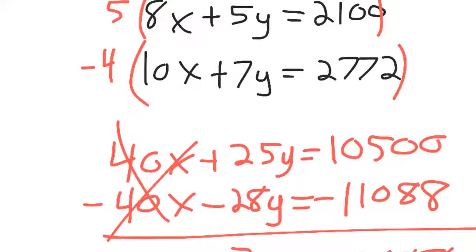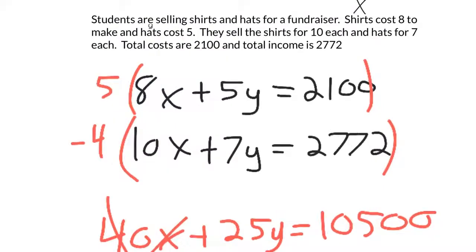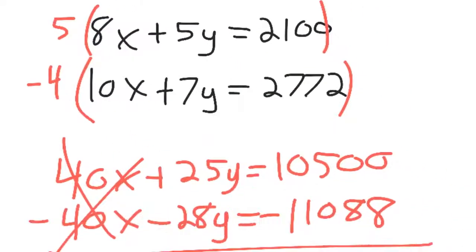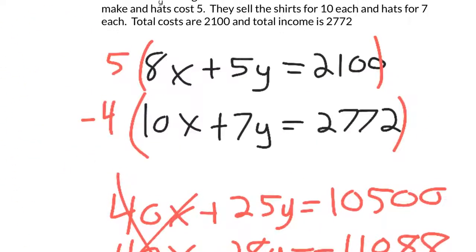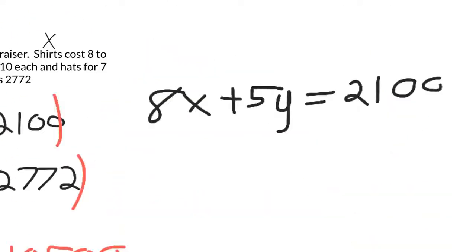And so we've answered the question about the number of hats. There's 196 hats. And to find out the number of shirts, you can just plug 196 back into either of these two equations. So we found out the number of hats was 196. So instead of a Y, now I get to replace it with the number 196.